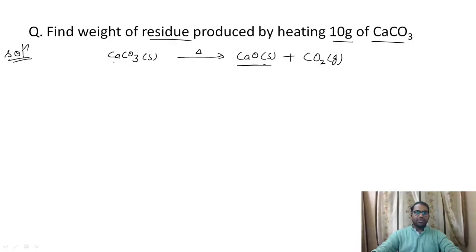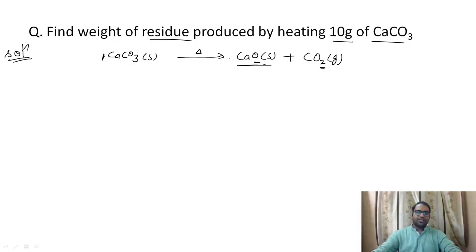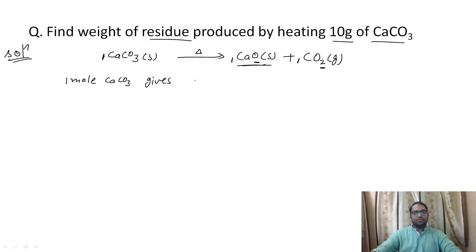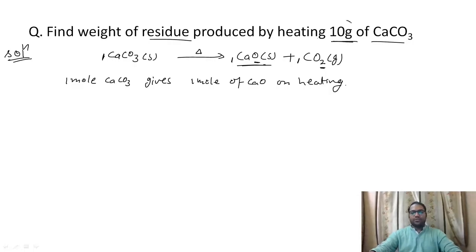We have calcium as one on both sides, one carbon on both sides, and three oxygens on both sides — one plus two, so three oxygens. The coefficients of calcium carbonate, calcium oxide, and CO₂ are all one. So from stoichiometry, one mole of calcium carbonate gives one mole of calcium oxide on heating.